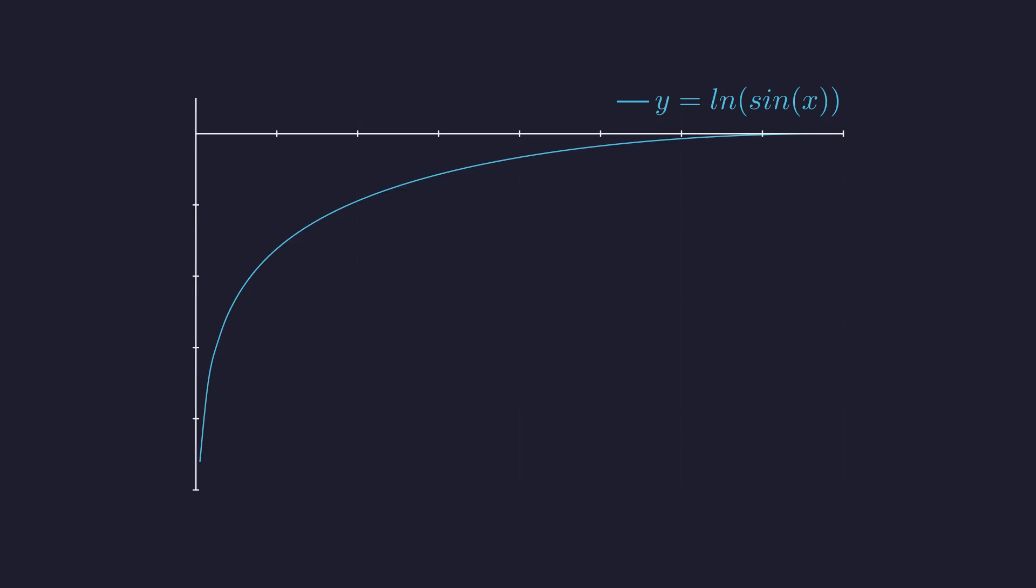Here is the graph of our function. It plunges to negative infinity as x approaches zero, which makes this an improper integral. The definite integral represents the area bounded by this curve and the x-axis. This shaded region represents the value of our integral.